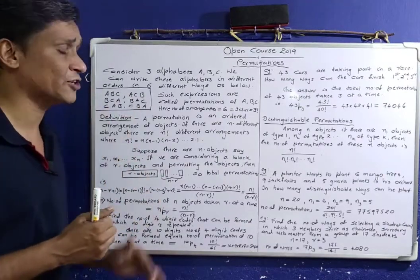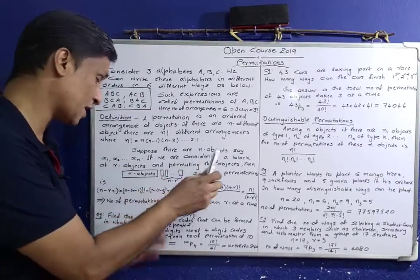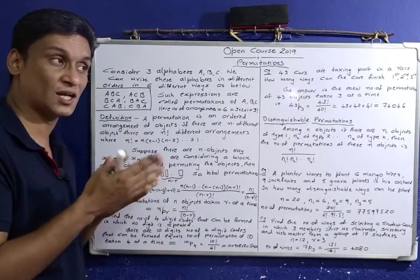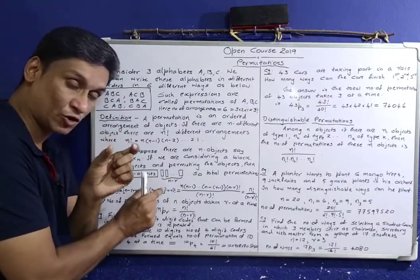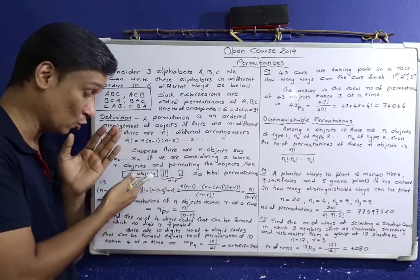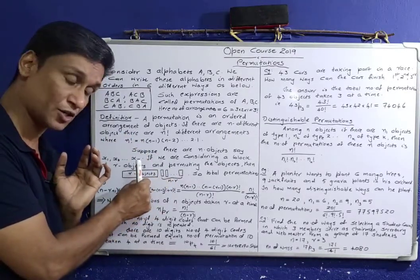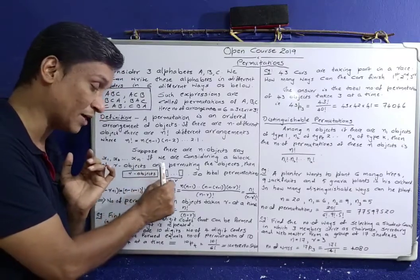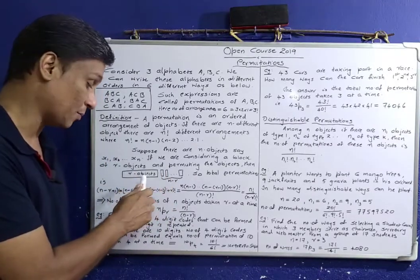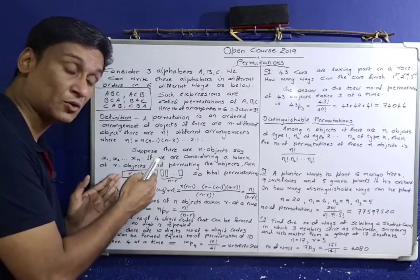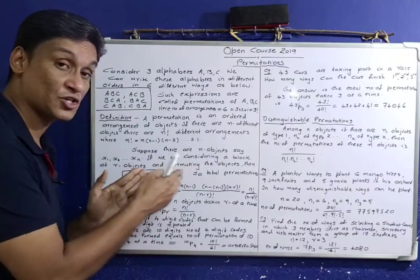This is the basic definition of permutation. Now suppose there are n objects — x1, x2, etc. — and we are considering a block of r objects. Then we have n minus r remaining objects.